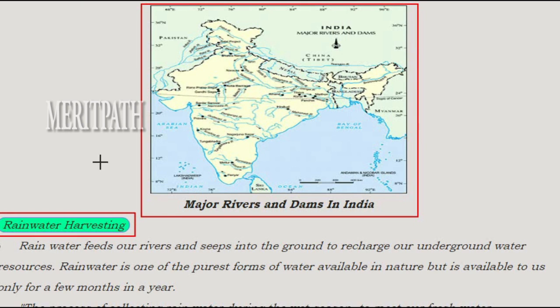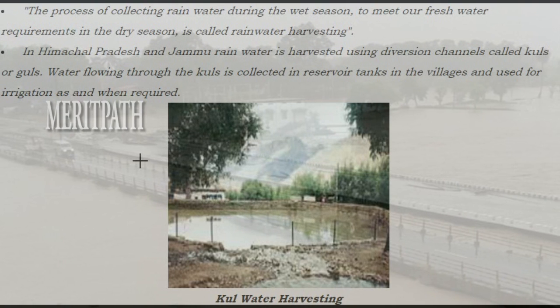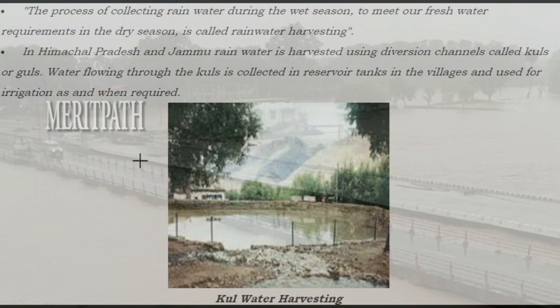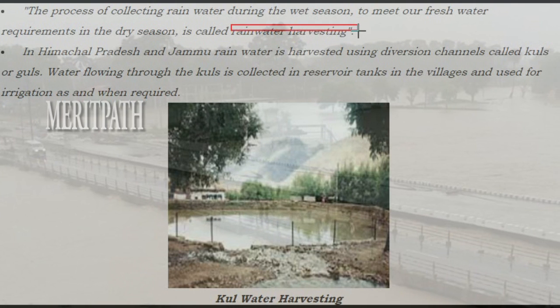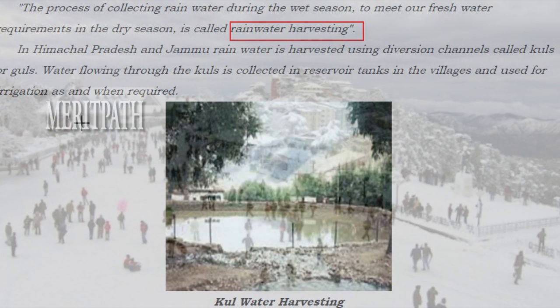Rainwater feeds rivers and seeps into the ground to recharge underground water resources. Rainwater is one of the purest forms of water available in nature, but is available only for a few months in a year. The process of collecting rainwater during the wet season to meet fresh water requirements in the dry season is called rainwater harvesting. In Himachal Pradesh and Jammu, rainwater is harvested using diversion channels called kuls or guls. Water flowing through the kuls is collected in reservoir tanks in villages and used for irrigation as needed.